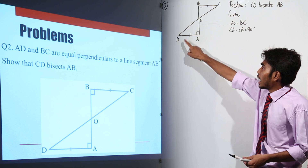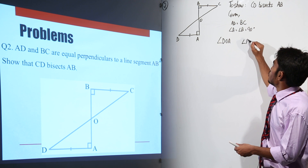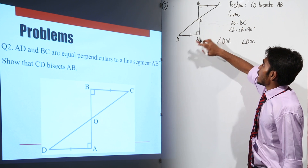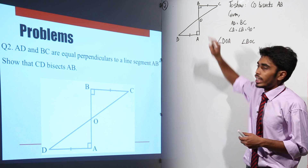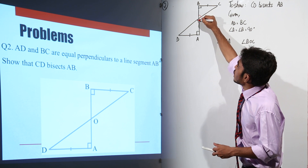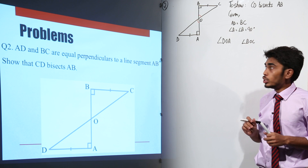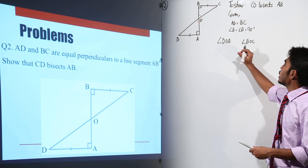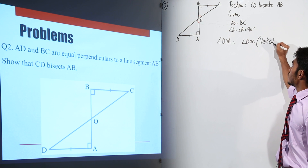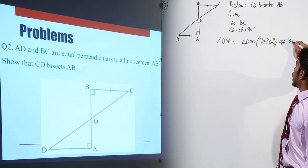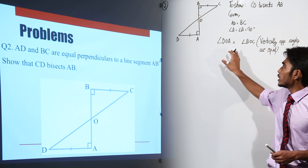Now, what can I say about angle DOA and angle BOC? BA and DC are two line segments that are intersecting at point O. So these two are nothing but vertically opposite angles, and as you already know, vertically opposite angles are equal to each other. So I can write angle DOA is equal to angle BOC, because vertically opposite angles are equal.